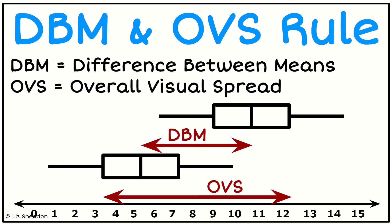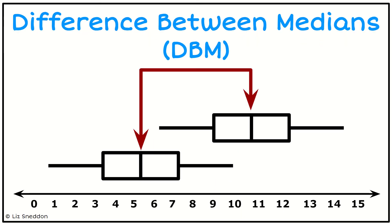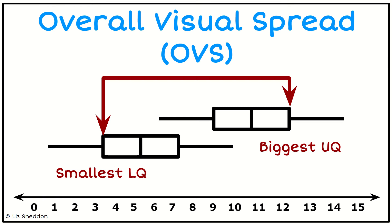The DBM and OVS. DBM stands for the difference between the medians, and OVS stands for the overall visual spread. These are the two things that we want to compare. For the difference between the medians, we're looking at whichever is the larger median subtract the smaller median. In terms of the overall visual spread, we're looking for the smallest lower quartile and the biggest upper quartile, and we want the distance between those two.